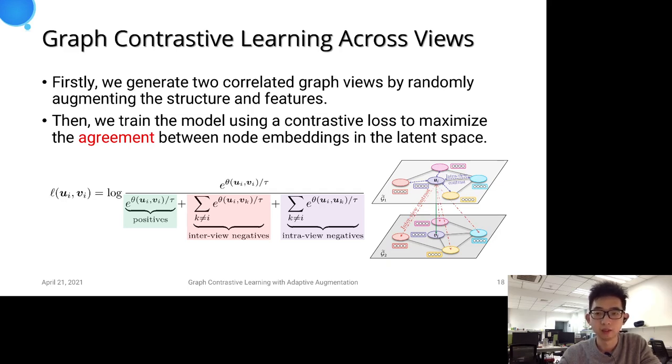Rather than contrasting node-level embeddings to global ones, we primarily focus on contrasting the embeddings at the node level. The contrastive objective takes the form of NT-Xent loss, the normalized temperature-scaled cross entropy.